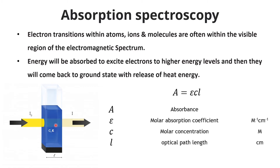The electromagnetic radiation absorbed by the sample is given by the Beer-Lambert formula: A = εCL, where A is the absorbance, ε (epsilon) is the molar absorption coefficient which is specific for a sample, C is the molar concentration, and L is the optical path length — a characteristic of the cuvette. There are no units for absorbance. The units for molar absorption coefficient are M⁻¹cm⁻¹, the unit for concentration is molarity, and the unit for optical path length is centimeters.